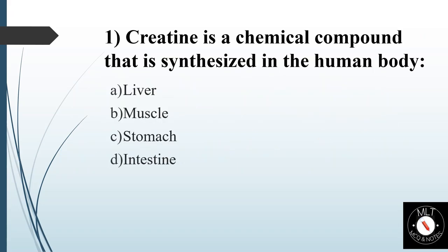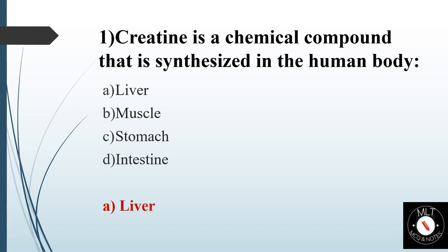First question. Creatine is a chemical compound that is synthesized in the human body. Option A: Liver. Option B: Muscle. Option C: Stomach. Option D: Intestine. Answer is Option A: Liver.